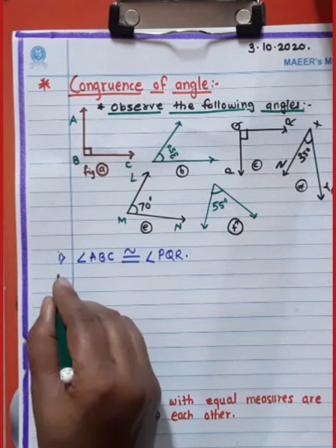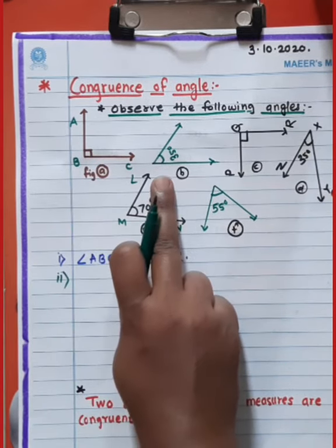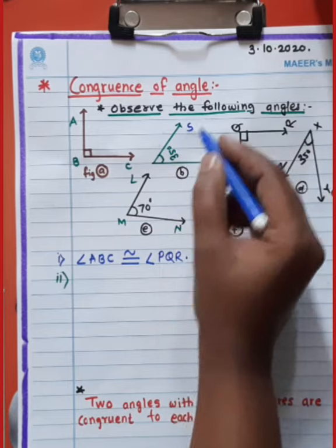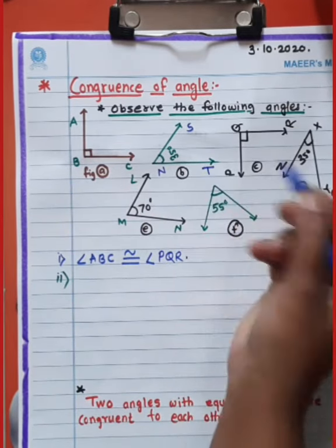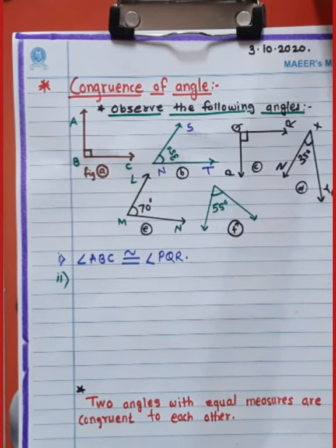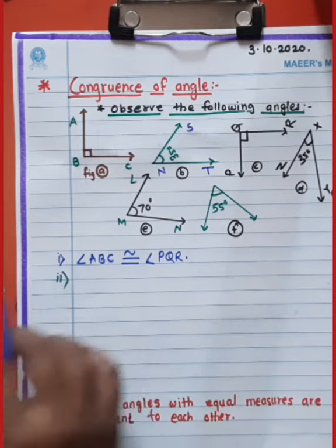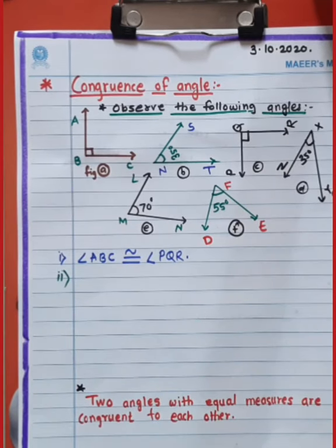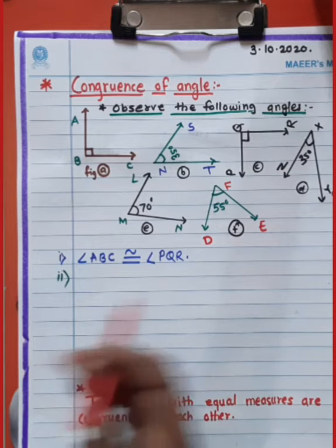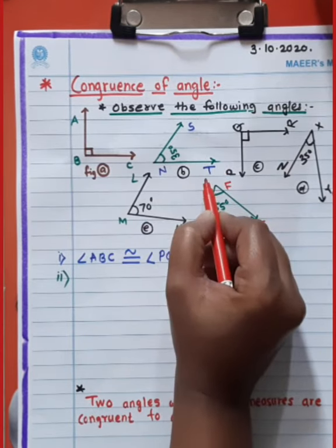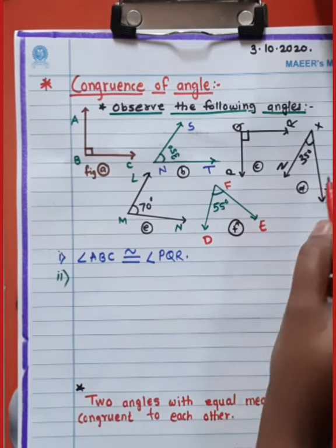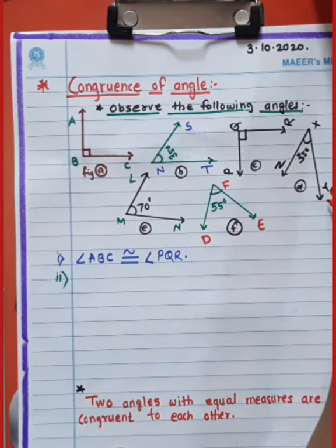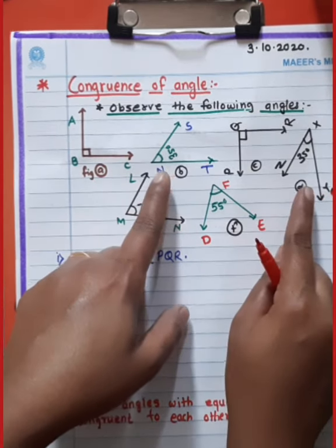Then the second figure. The second angle figure B — to give the name of this angle: S and T. And the name of figure D: Z, X, and F — D, E, and F. Look at this carefully: angle S and T is 35 degrees.